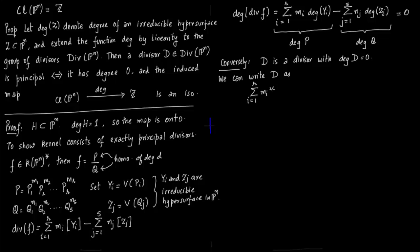Now again, it is a divisor, so it is just a bunch of integers thrown together with hypersurfaces of codimension one. We just separated our divisor into positive part and the negative part.